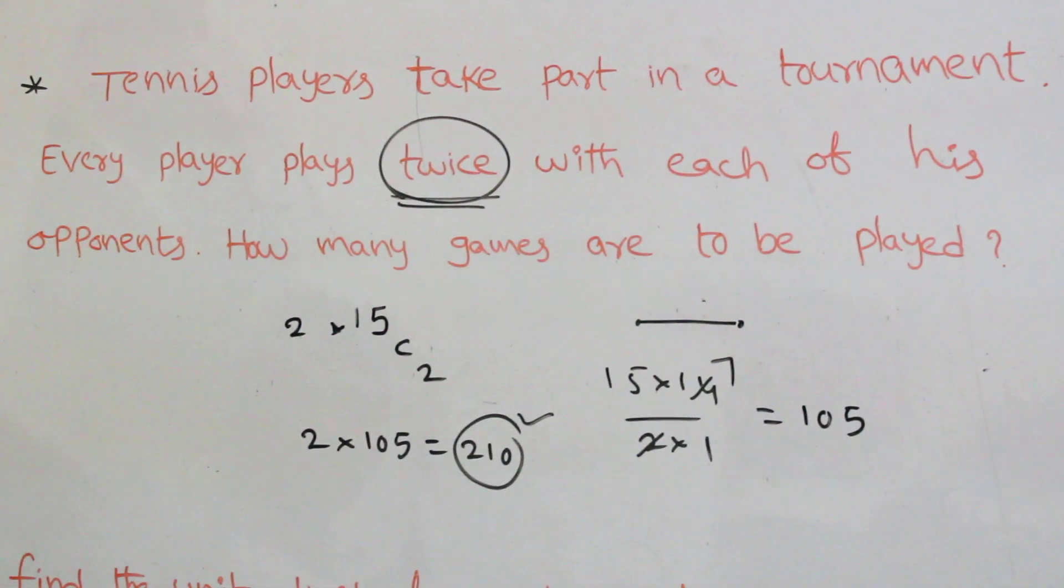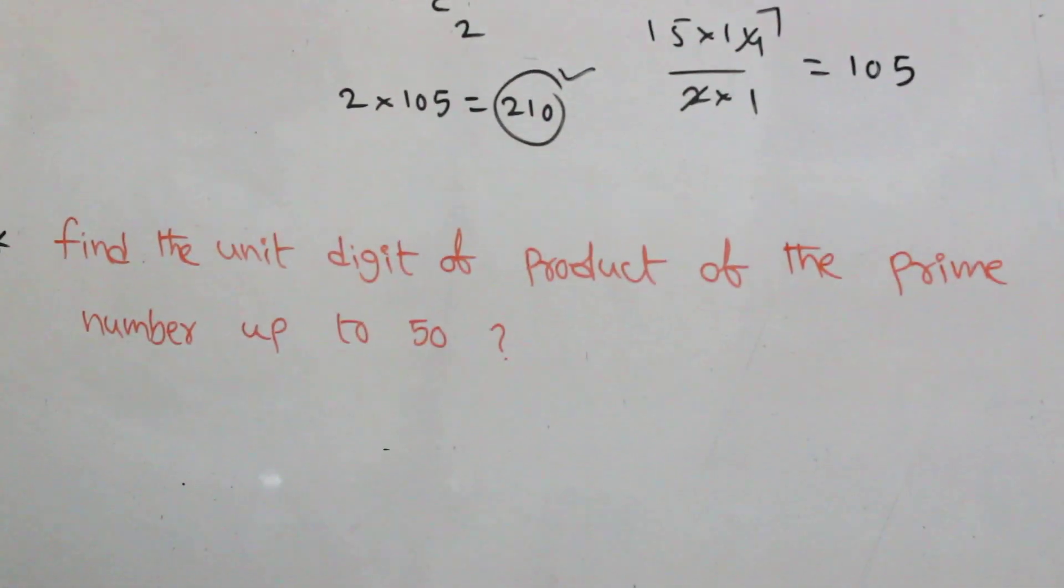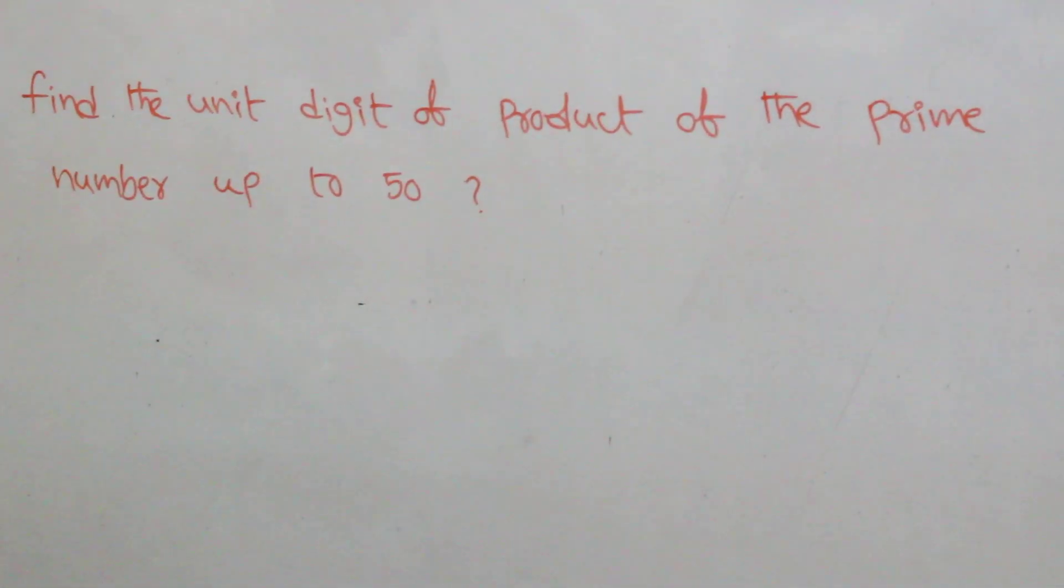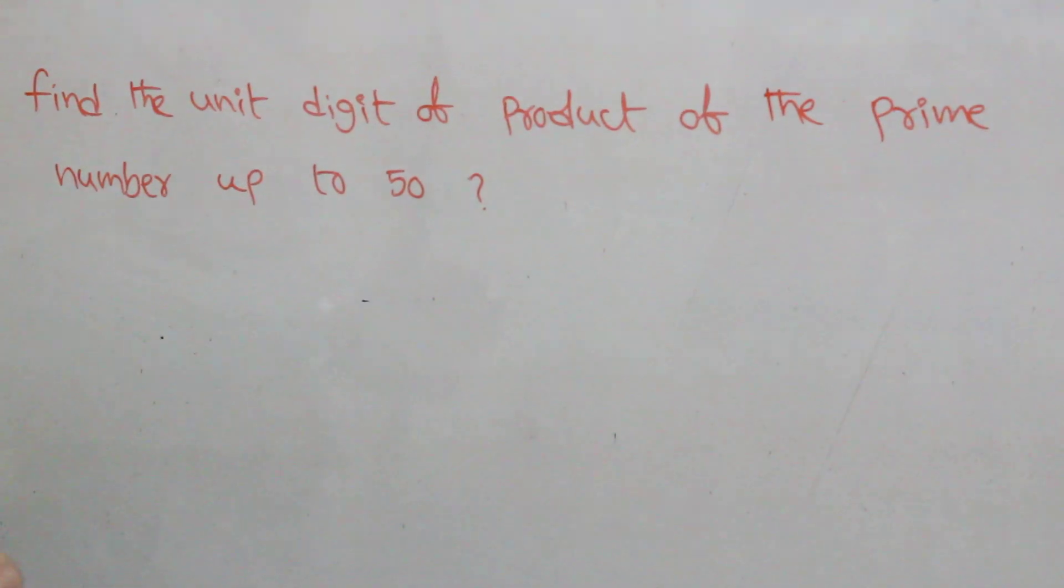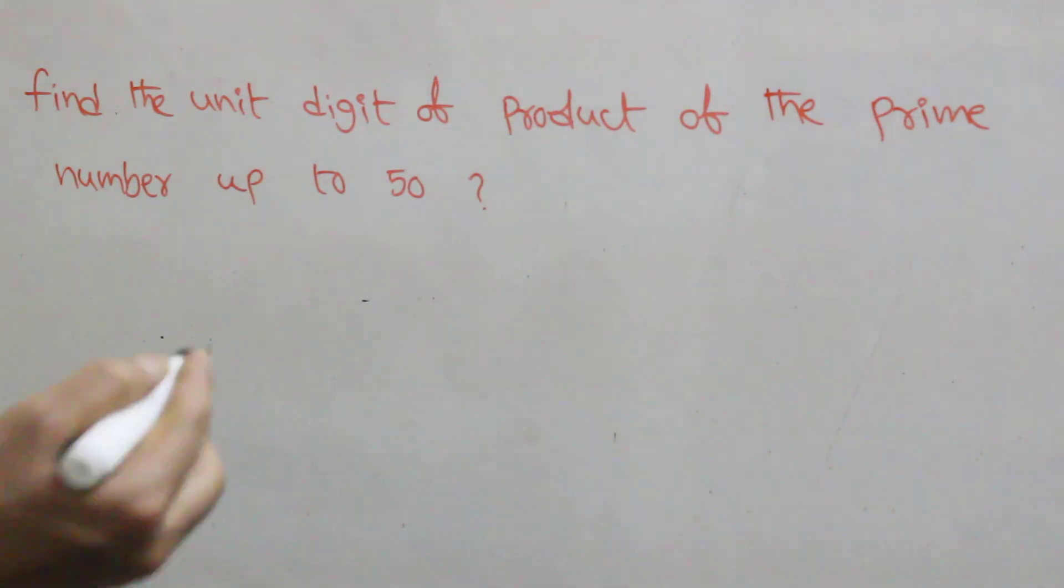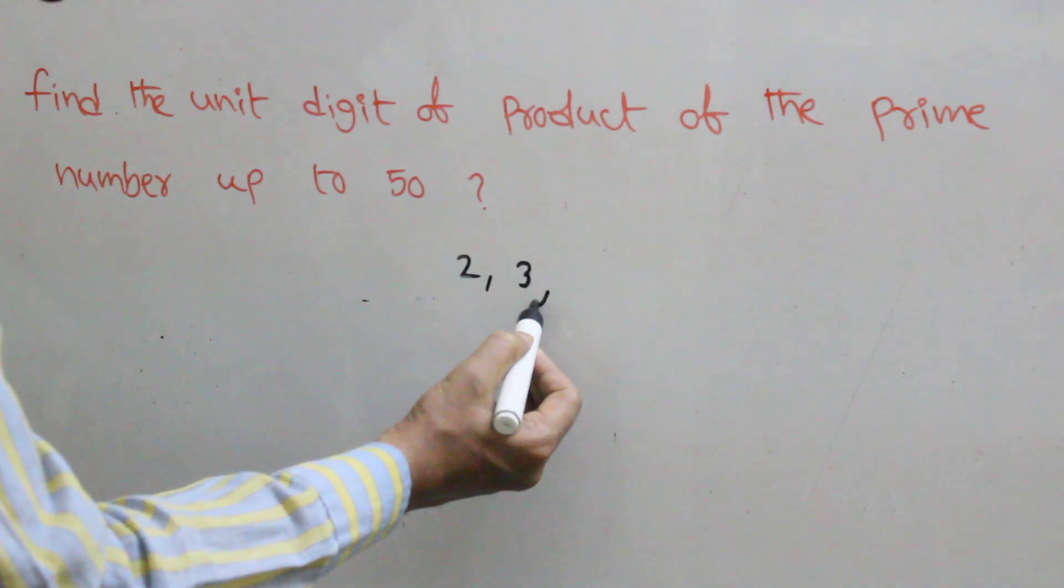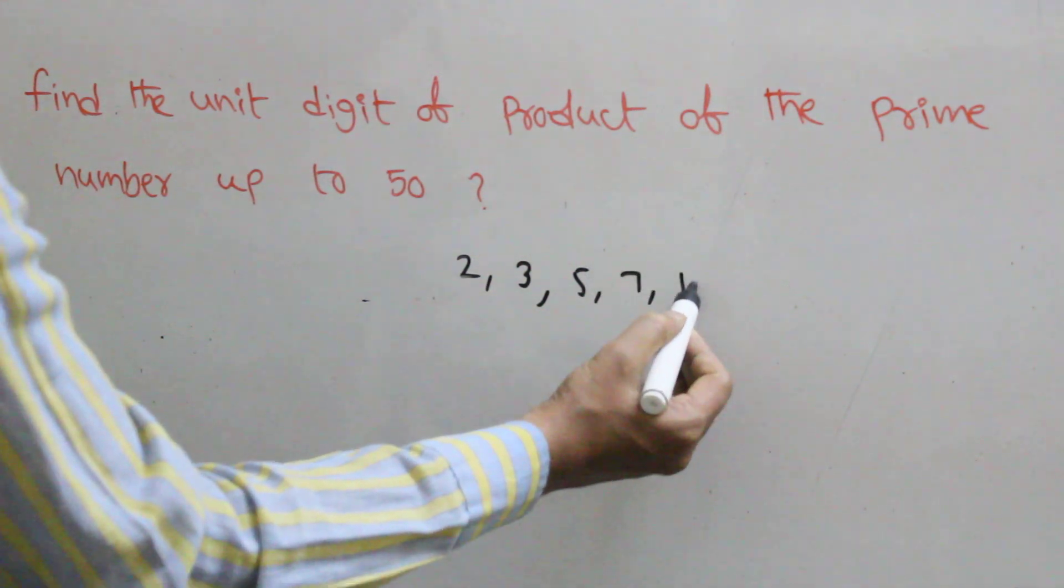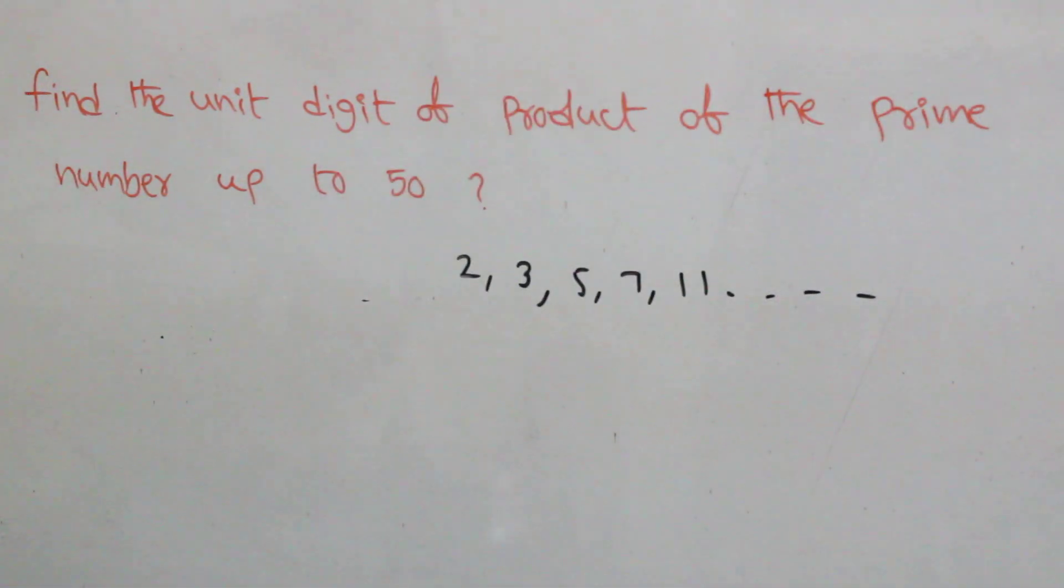Coming to the next question. Find the unit digit of product of the prime numbers up to fifty. Do you know prime numbers? The prime numbers means a number is divisible by one and itself only. What are the prime numbers? Two, three, five, seven, eleven, and so on. These are the prime numbers.